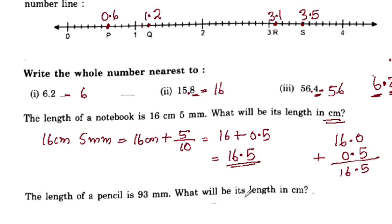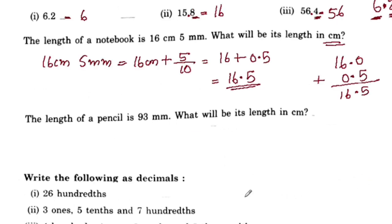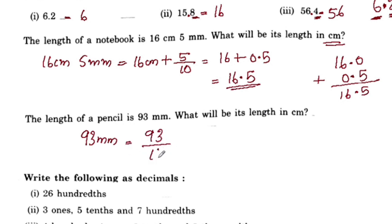The length of a pencil is 93 mm. What will be its length in centimeters? 93 by 10 centimeters, that is 9.3 centimeters.